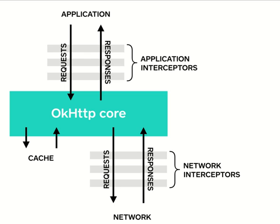OKHttp3 implements the HTTP 2.0 client for you, so all those advantages apply. Additionally, OKHttp3 preserves connections when the network is in trouble — if your connection drops and comes back, OKHttp3 will transparently manage the connection breaks for you. If you're sending a big chunk of data and your connection breaks, OKHttp will try to reconnect and resend the data behind the scenes, so you won't get any failed message — it takes care of your request by default.